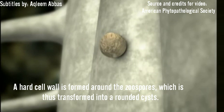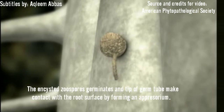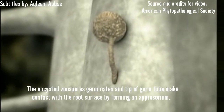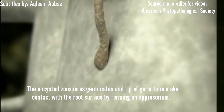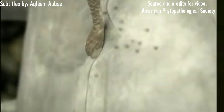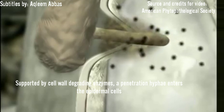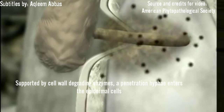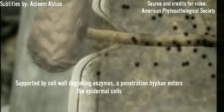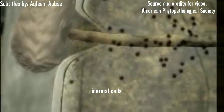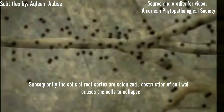The encysted zoospore germinates. The tip of the germ tube makes contact with the cell surface by forming an appressorium. Supported by cell wall-degrading enzymes, a penetration hypha enters the epidermal cell. Subsequently, the cells of the root cortex are colonized.